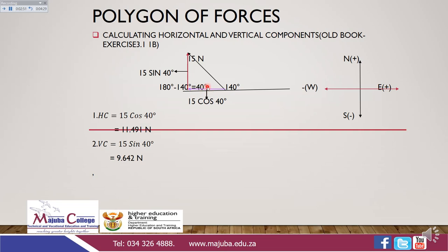We also need the magnitude of the horizontal component, which is adjacent to 40 degrees. We are going to use the trig ratios. For the vertical component — opposite and hypotenuse — we use sine of theta. The magnitude of the vertical component will be 50 × sin 40°. For the horizontal component — adjacent and hypotenuse — we use cos of theta. The magnitude of the horizontal component will be 50 × cos 40°, which equals 38.302 N. The vertical component equals 50 × sin 40° = 32.139 N.